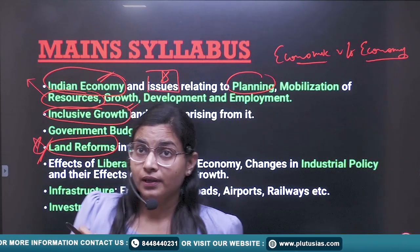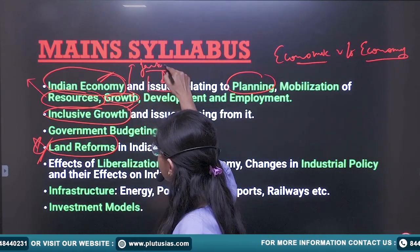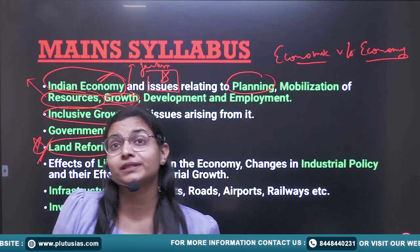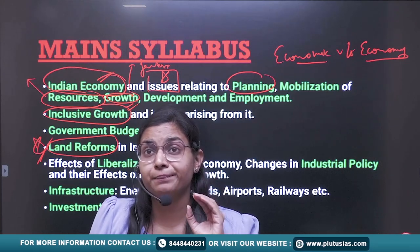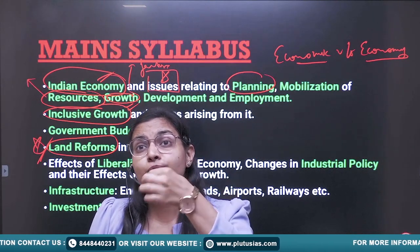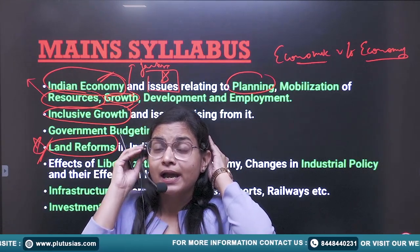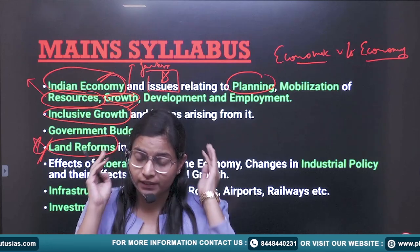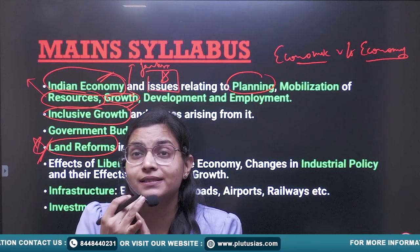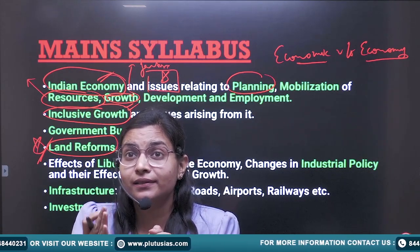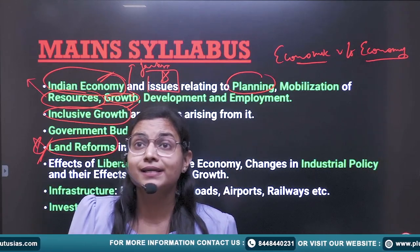Thereafter comes 'growth' — you have to read the factors contributing to growth and the issues in growth. In previous years, UPSC has asked about potential GDP, what factors contribute to it, and why India is not able to reach its potential GDP. You have to segregate every topic into factors, characteristics, issues, government steps taken, and what can be done — prepare the way forward.